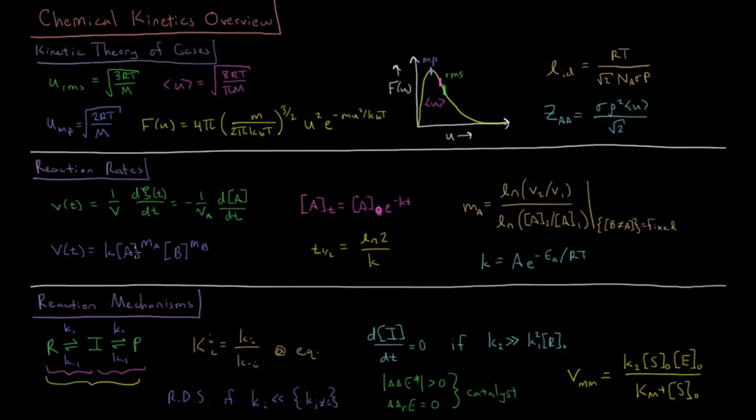We can determine what the reaction order for a given reactant is by fixing all of the concentrations of the reactants which are not that reactant and then calculating the rate at two different concentrations of that reactant. So taking the natural log of V2 over V1 taken at two different concentrations of A divided by natural log of the second concentration of A divided by the first concentration of A.